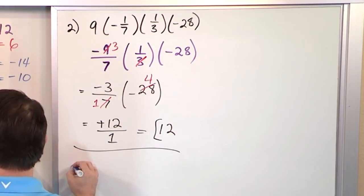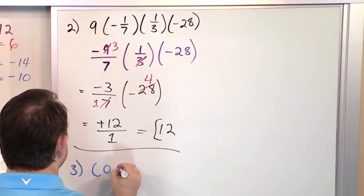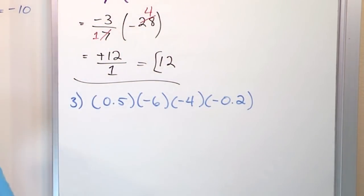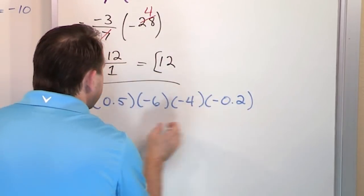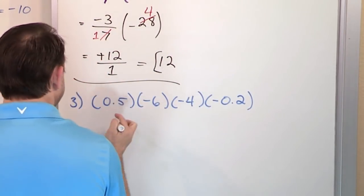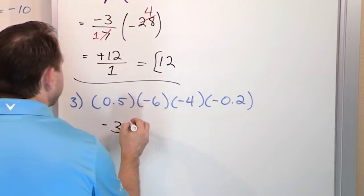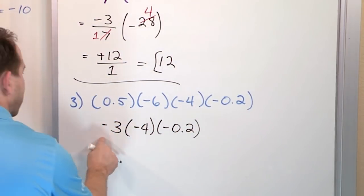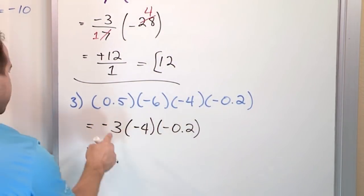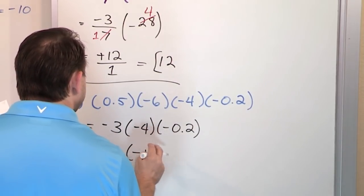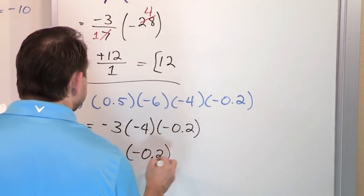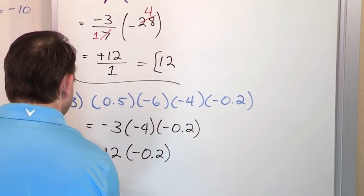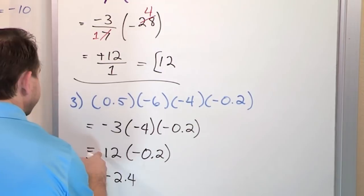Let's say we have 0.5 times negative 6 times negative 4 times negative 0.2. The same exact rules apply — we just have some decimals here. We work on the first two first: 0.5 times 6 is 3, but positive times negative means it's negative 3. We still have to multiply by negative 4 and negative 0.2. Next, 3 times 4 is 12, but negative times negative means positive 12. Then 12 times 0.2 gives 2.4, but positive times negative gives negative 2.4.